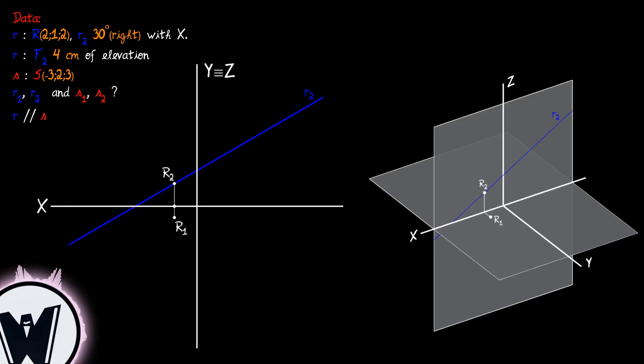To obtain the horizontal projection of the straight line R we need the direction or another point, verifying the property of a straight line definition. On our data we have another point, the front trace F of the straight line R, which is the point of intersection of this straight line with the frontal reference plane.